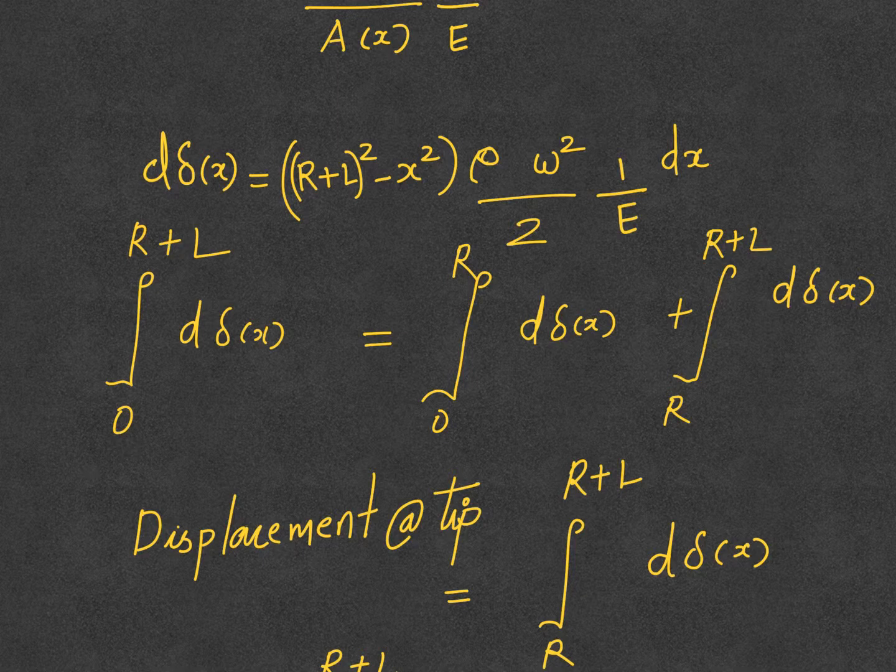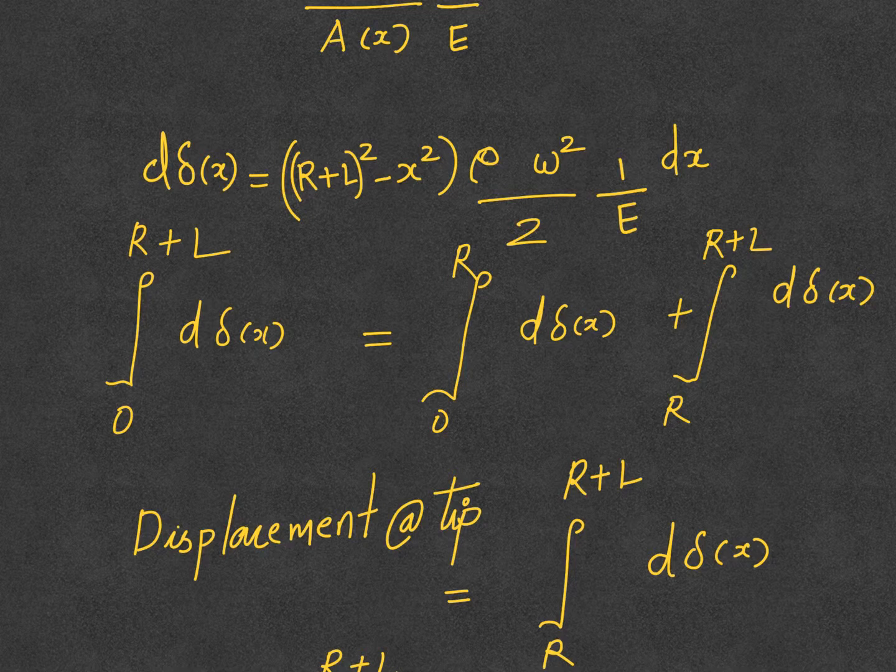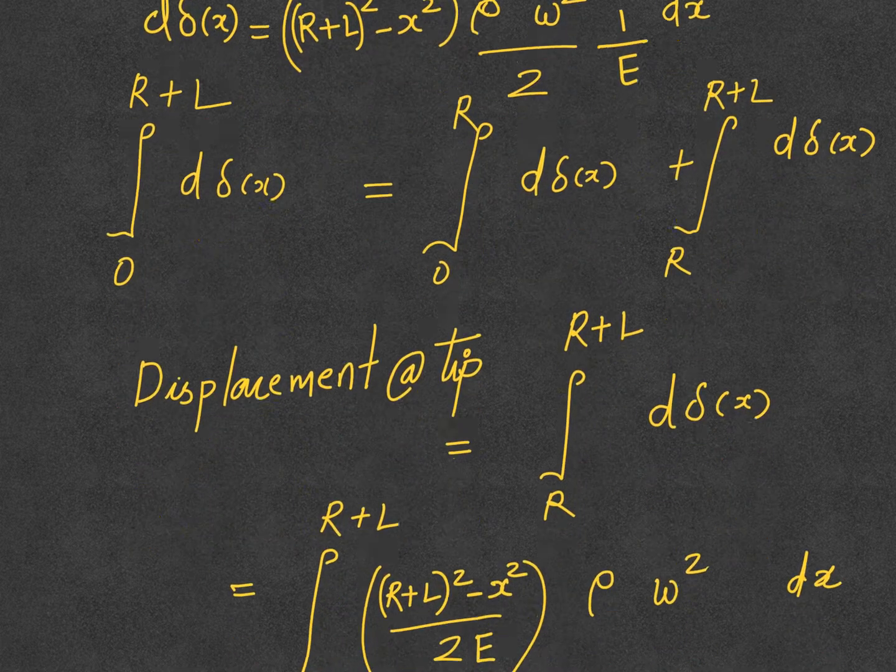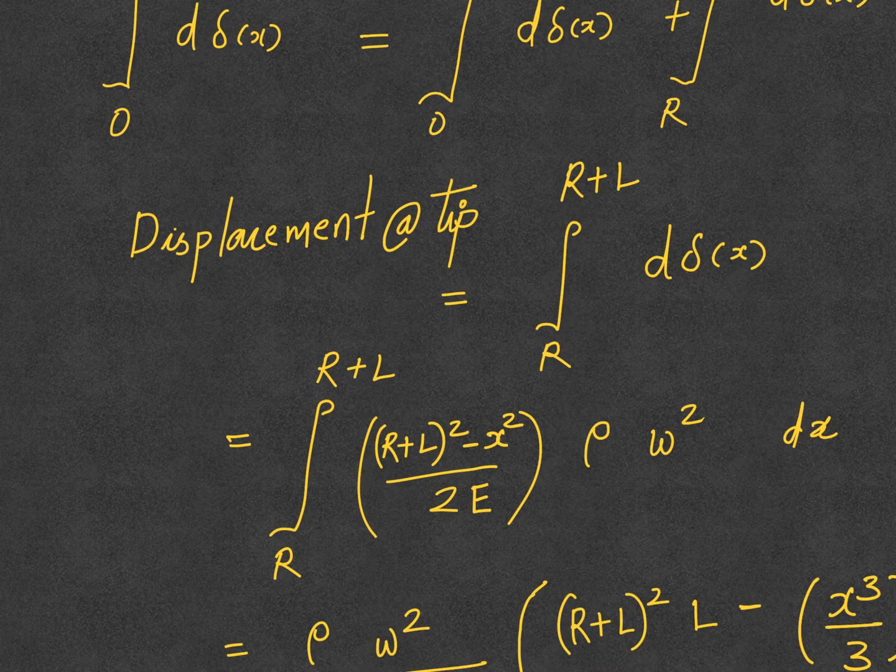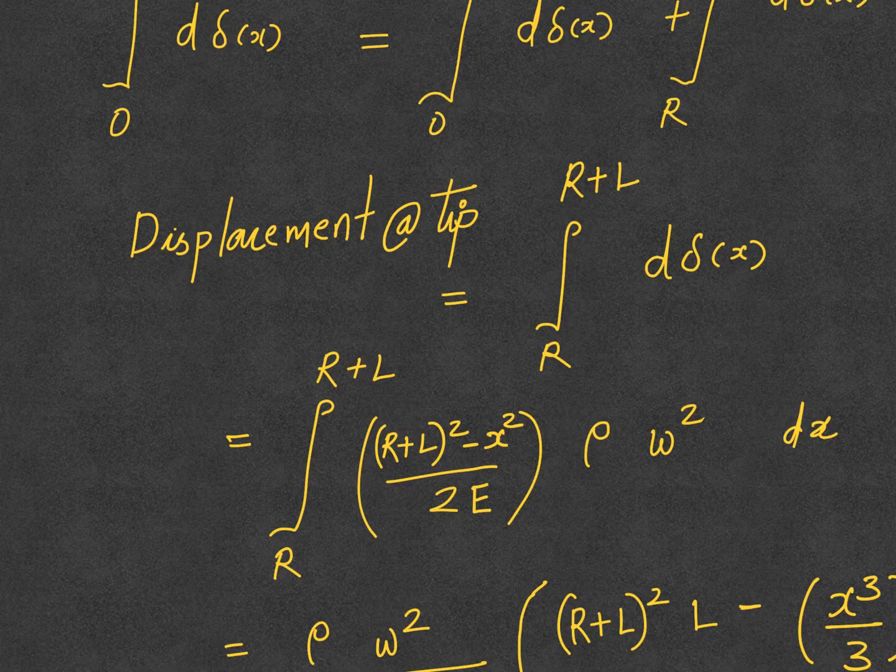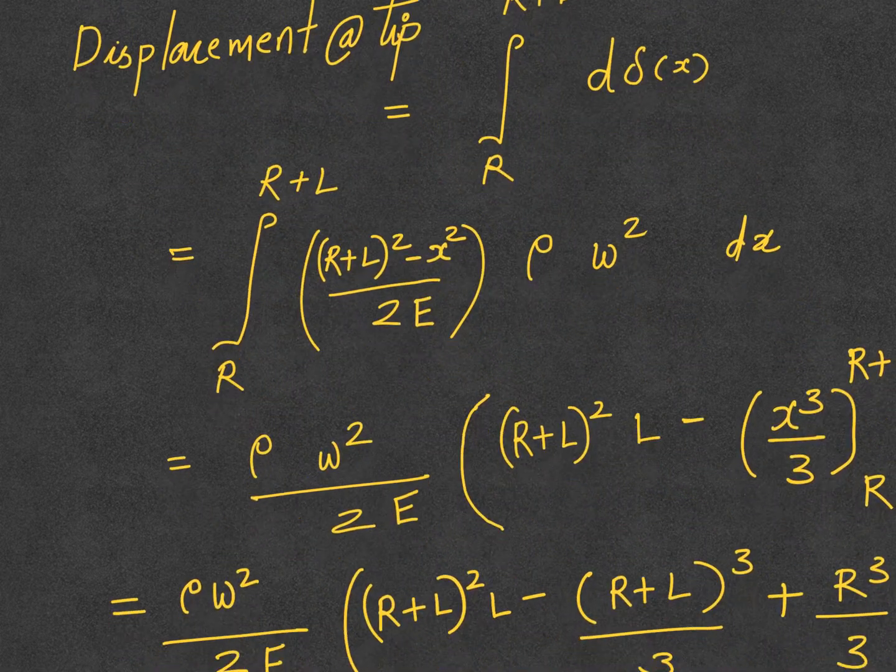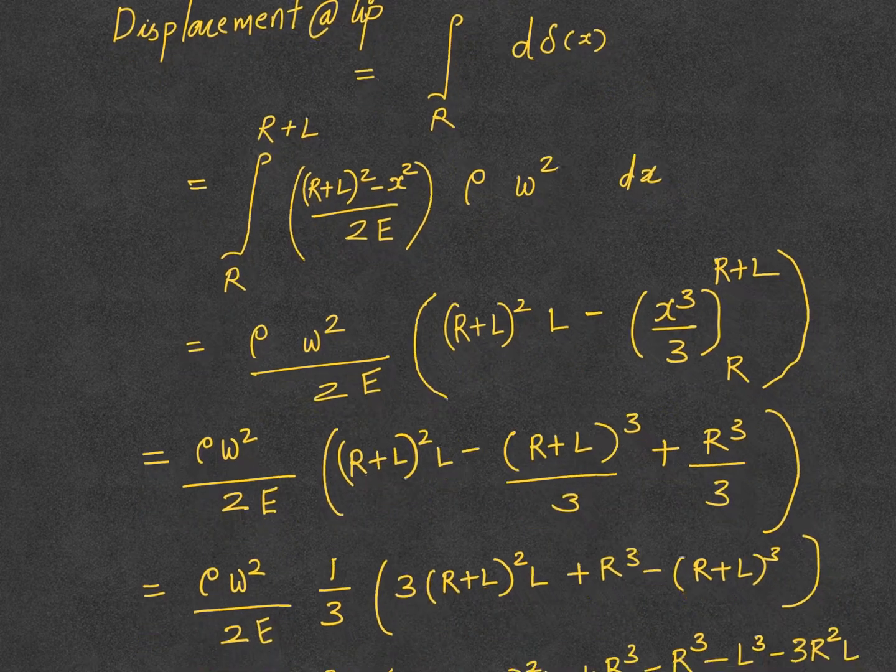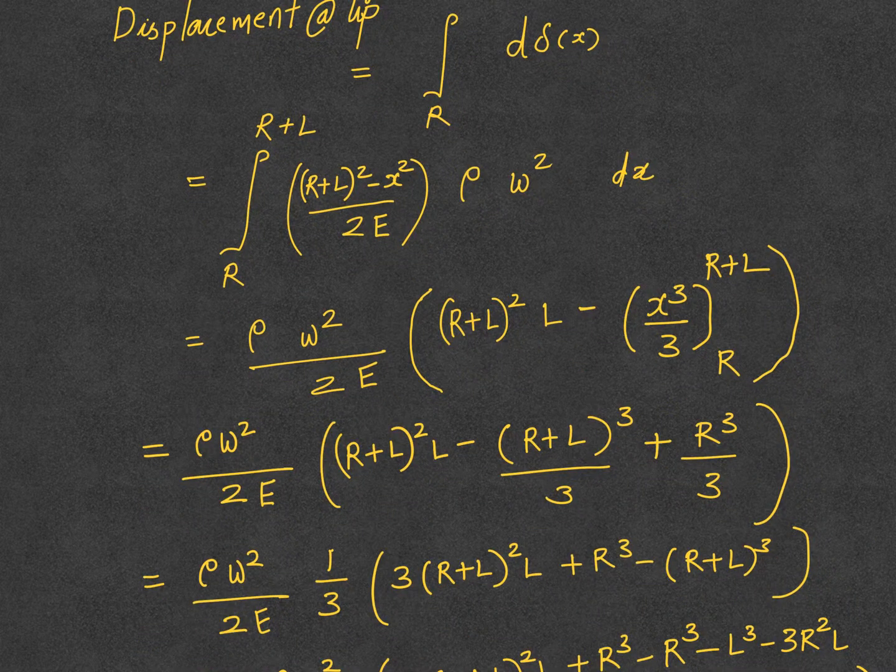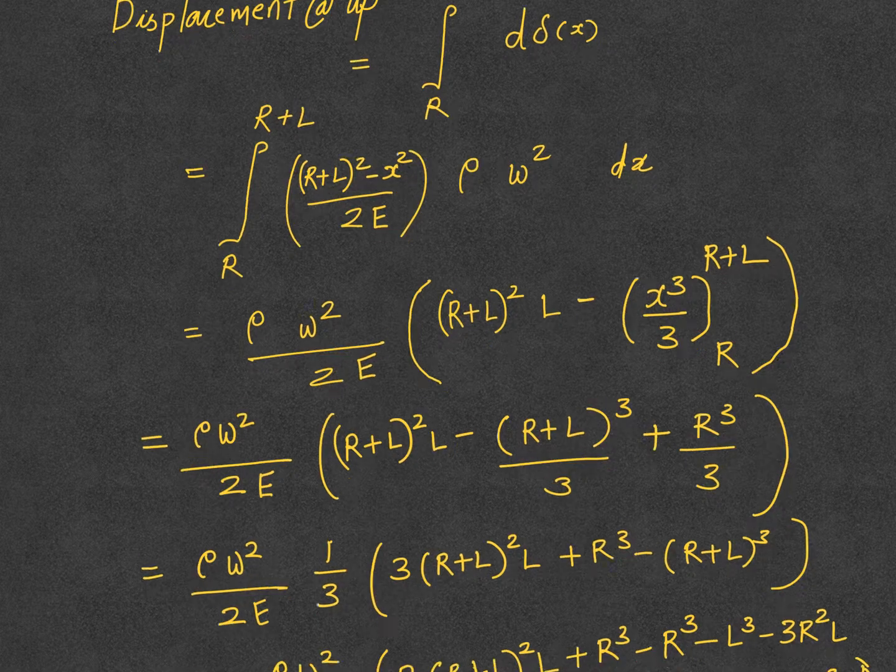You integrate over the domain zero to R+L, but from zero to R there is no deformation because your disk is rigid. If the disk is not rigid, you would have to account for this term also, but in our case that makes things a lot easier—we need to integrate only from capital R to R+L. The rest is simply cranking the mathematical wheel, but you have to be careful with the math.